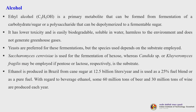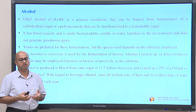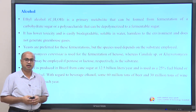The species selection is very important and depends on the substrate. For example, Saccharomyces cerevisiae is used for fermentation of hexose, whereas Candida species or Kluyveromyces fragilis may be employed if pentose or lactose is used as a substrate for ethanol production. Ethanol is produced in Brazil from cane sugar at 12.5 billion litres per year and is used as a 25 percent fuel blend or as a pure fuel. Some 60 million tons of beer and 30 million tons of wine are produced each year globally.